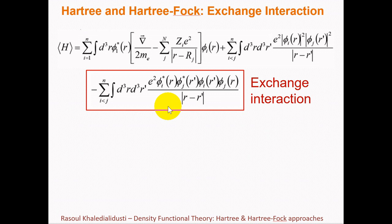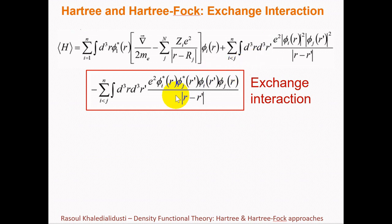Looking at the exchange interaction term: we have orbital i evaluated over r and r-prime, and orbital j evaluated at r-prime and r. Keep in mind that the exchange interaction term is not the expectation value of an energy term. The Hartree potential is the product of probabilities, but the exchange interaction term has no probability — it originates purely from the anti-symmetric nature of the wave function, and it is called the exchange interaction term.